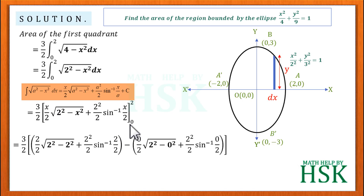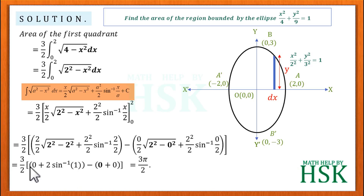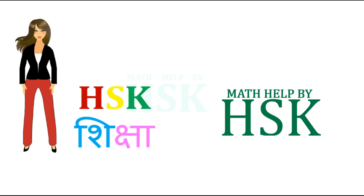So the bracket evaluates to 0 + π − 0 = π. Therefore, area of first quadrant = (3/2) × π = 3π/2. Thus, area of the ellipse = 4 × (3π/2) = 6π square units. This is the required answer.